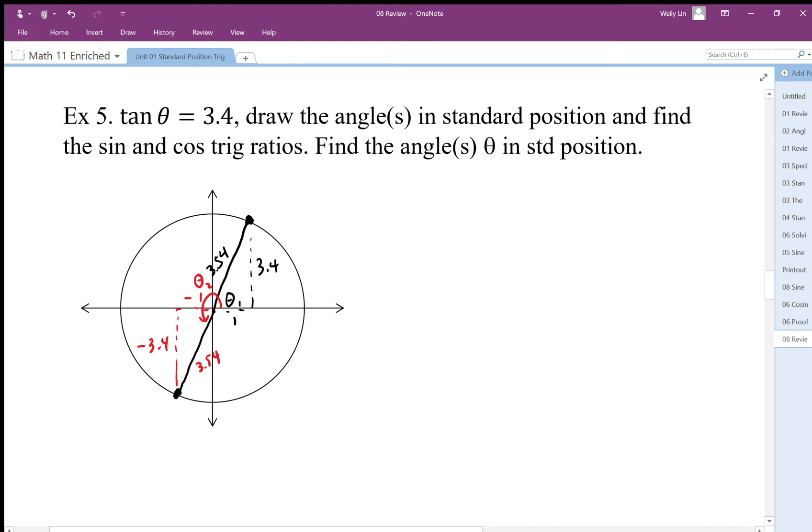I want to write the trig ratios, so I have tan, so I need to write sine theta 1 is going to be 3.4 divided by 3.54, it's approximately 0.960.